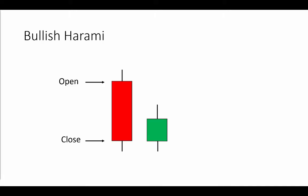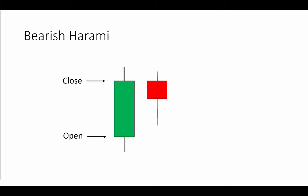For the bullish harami, you're looking for a reversal at the end of a downtrend, so the two prior bars are down closes. The prior bar is a large body bar and the current is a small body bar. The small body is contained within the large range, and the open of this bar is at or below the close of the large body bar, subject to a one tick modification.